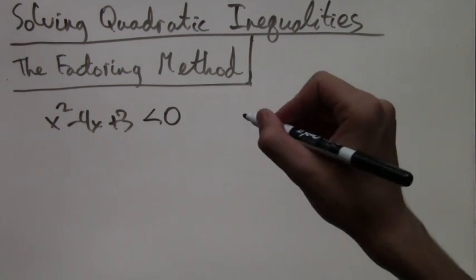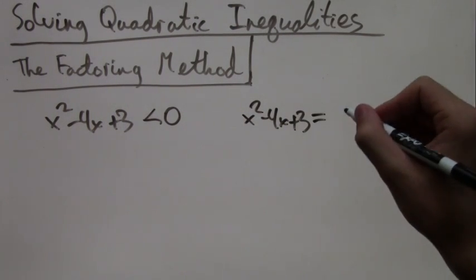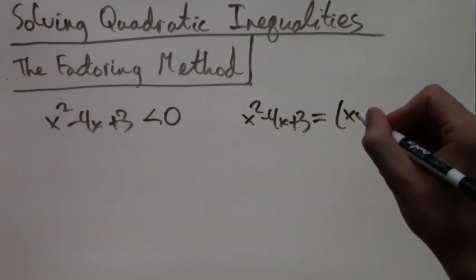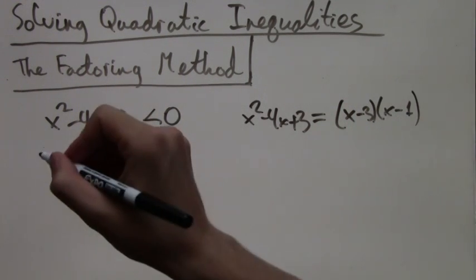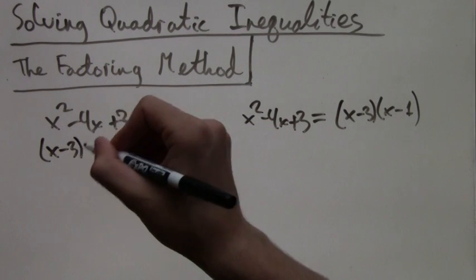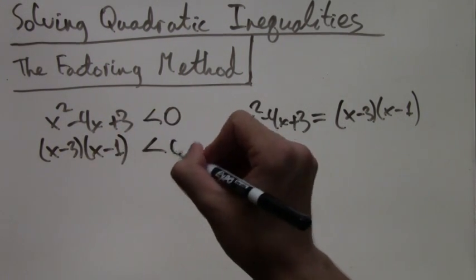I will just factor this equation, the formula x squared minus 4x plus 3 for you. It's x minus 3 times x minus 1. For more on how to factor quadratic functions, you can look at my video lesson with that title.